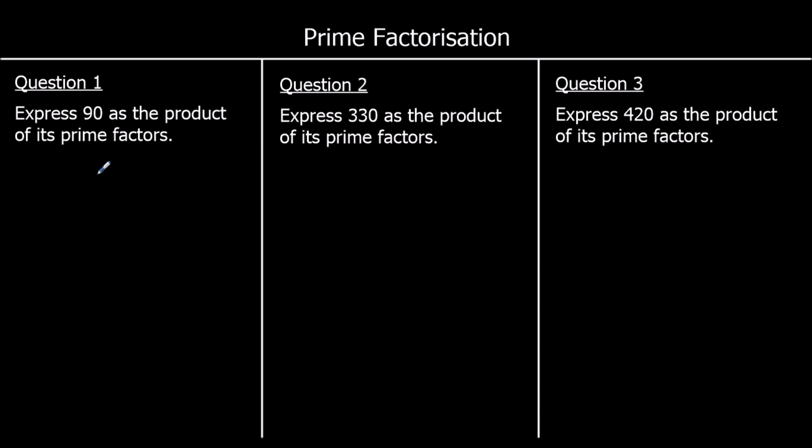So 90 is 2 times 45, times 3 times 3 times 5, or 2 times 3 squared times 5.